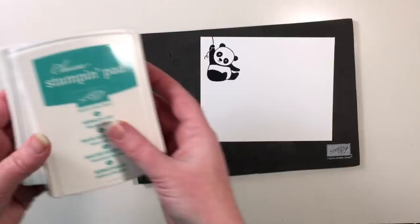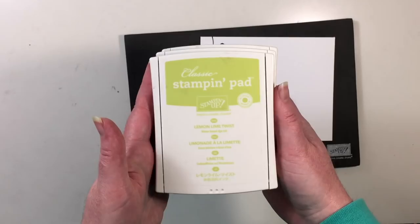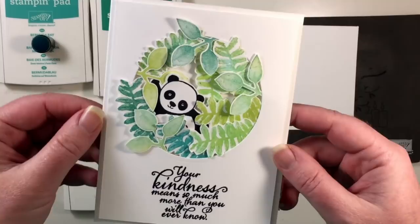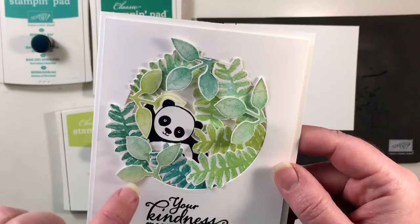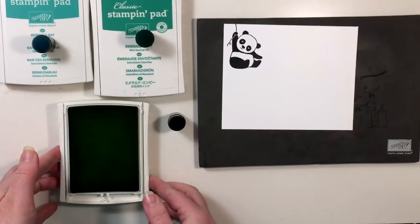I am using three different tones of green for this card: Bermuda Bay, Emerald Envy from the 16-18 in colors and Lemon Lime Twist from the 17-19 in colors. I also have some sponge daubers here that I will be using with these colors to sponge my stamps to get the variegated look.